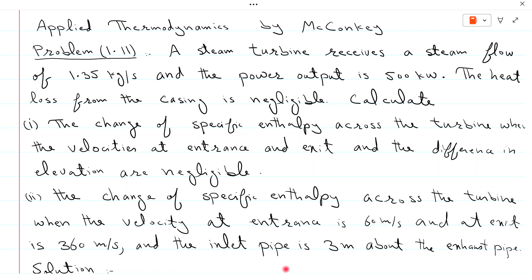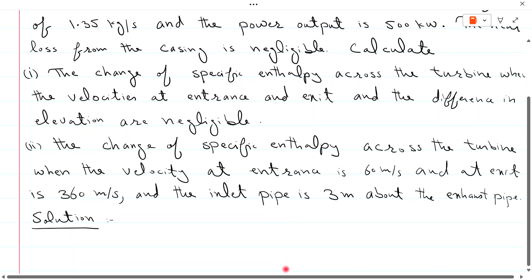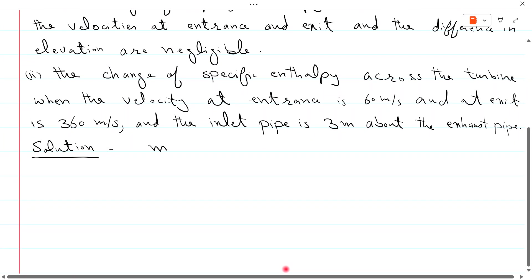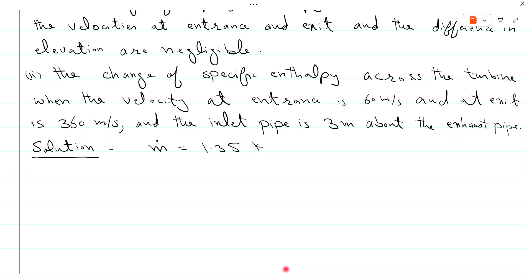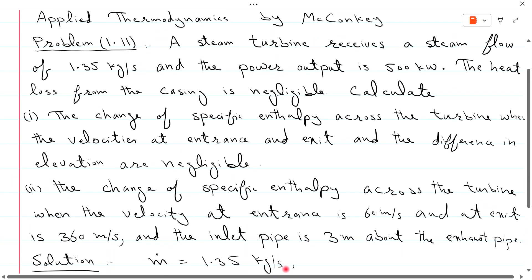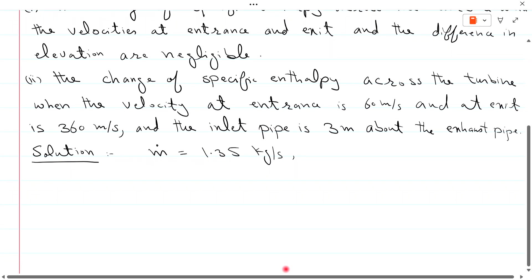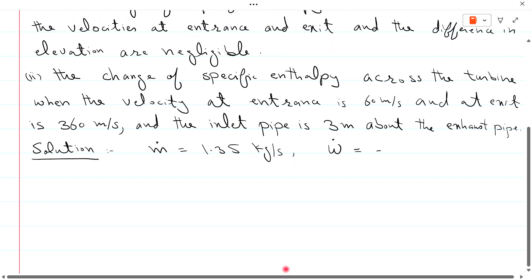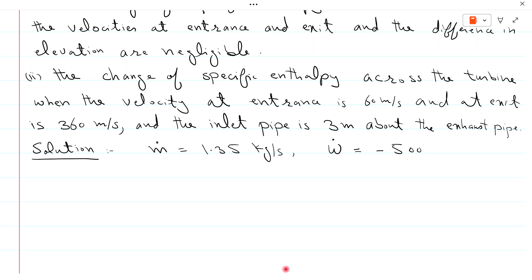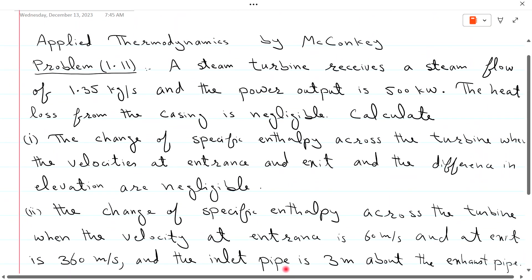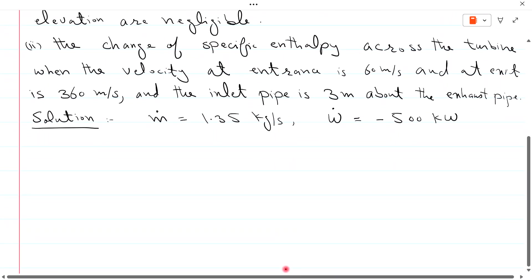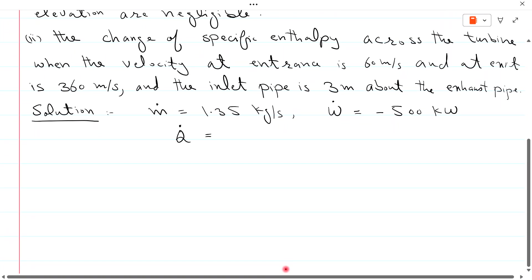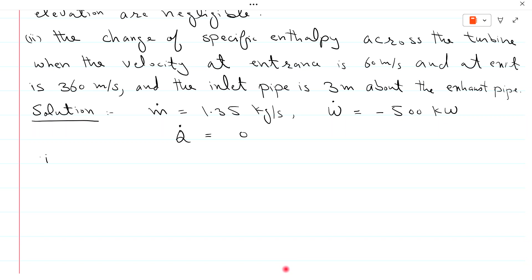First we write the given data. Steam flow: M_dot = 1.35 kg per second. Power output: W_dot = minus 500 kW — input is positive and output is negative according to the Mekanki convention. The heat loss from the casing is negligible, meaning no heat loss or gain, so Q_dot = 0.